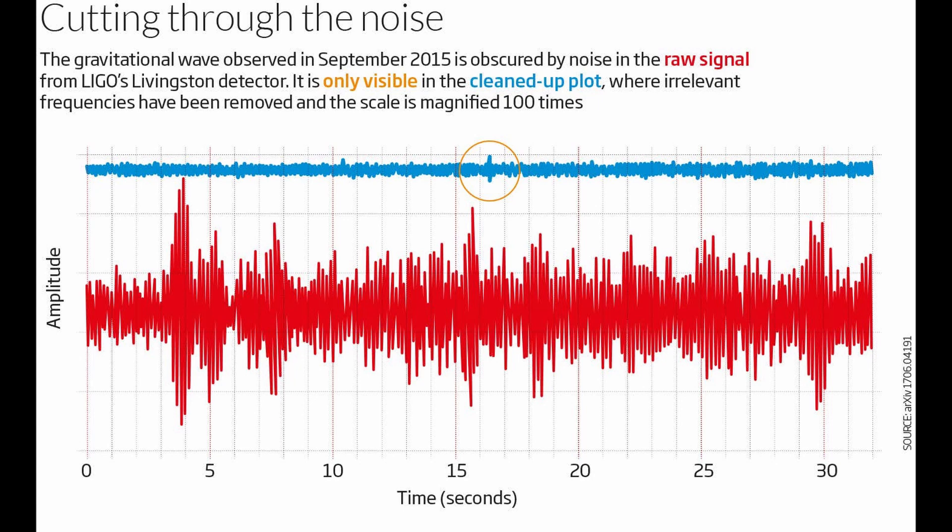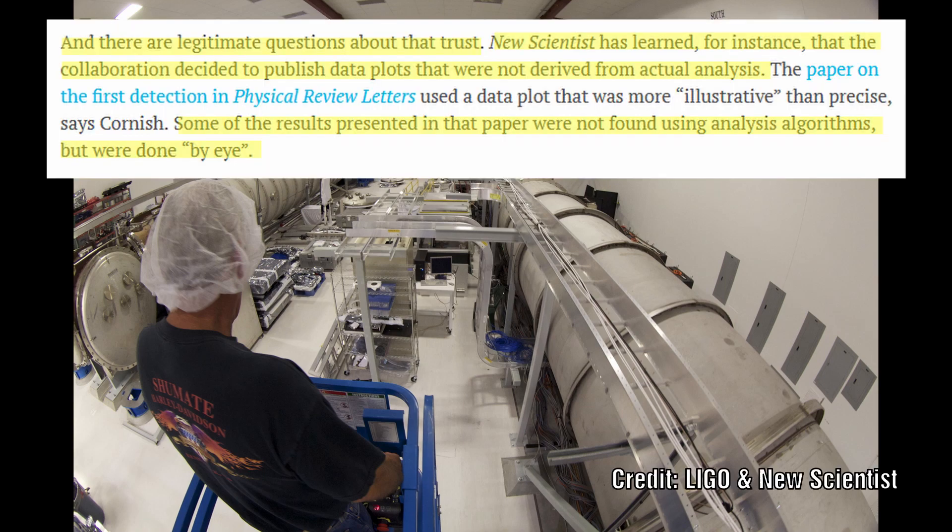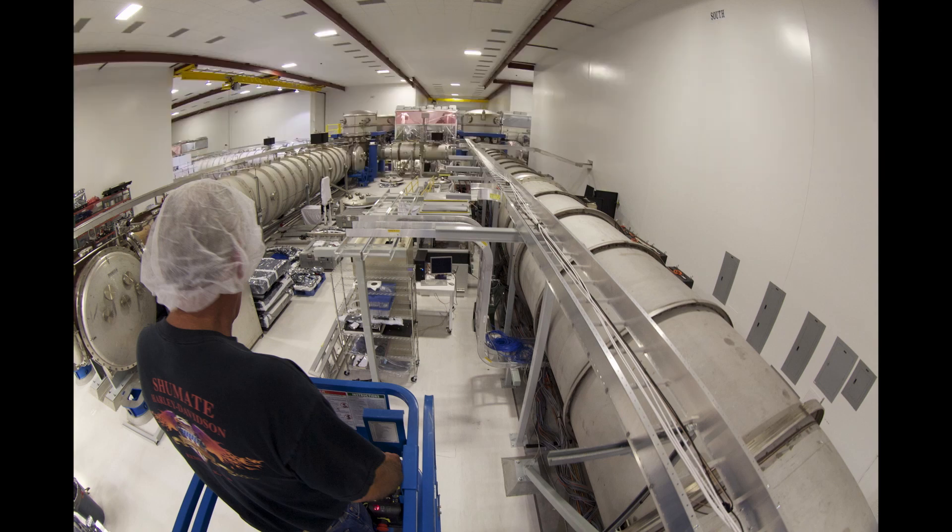LIGO must work with single, uncontrollable, unrepeatable events. Although there are three detectors, they must work together as one instrument. Even more disturbing is that the new scientists uncovered that the collaboration decided to publish data plots that were not derived from actual analysis. They used data plots that were more illustrative than precise. Some of the results presented in their original paper were not found using analysis algorithms, but were done by eye. So a huge question remains as to whether we have actually detected gravitational waves at all.